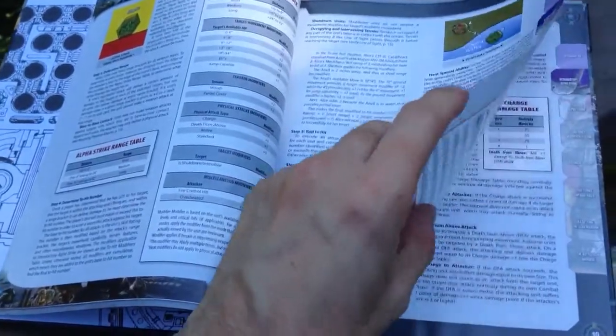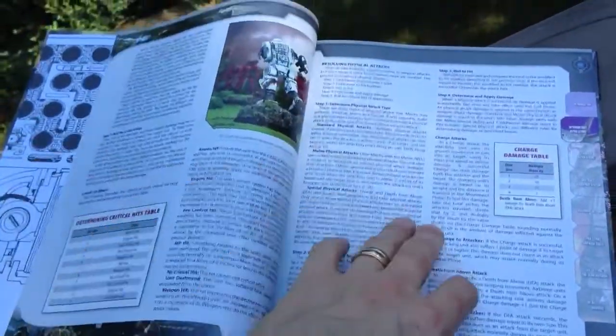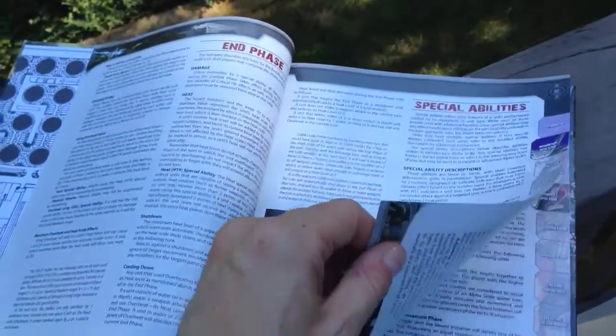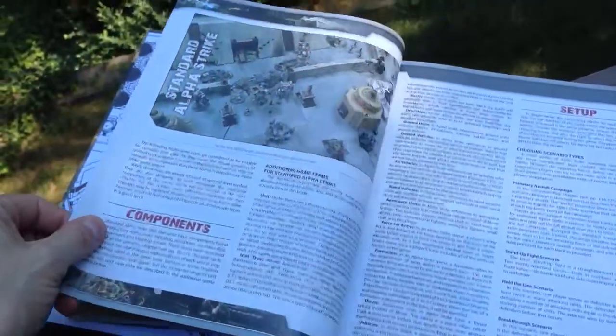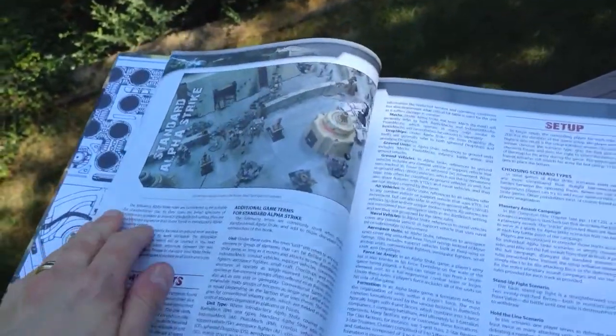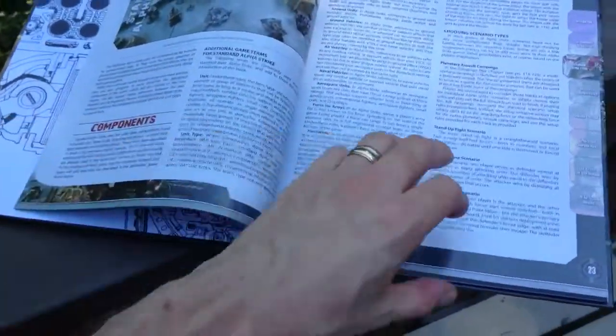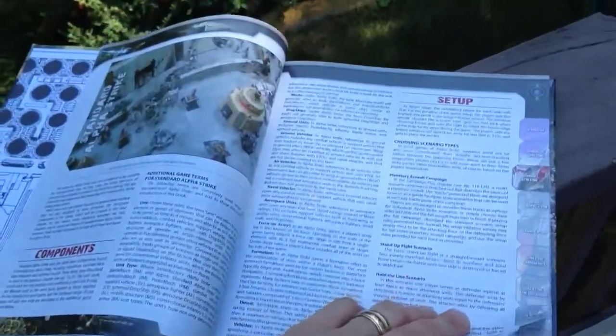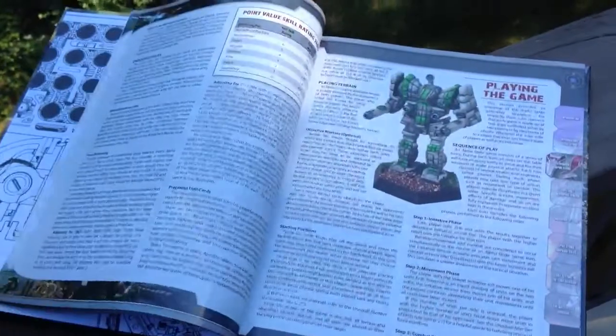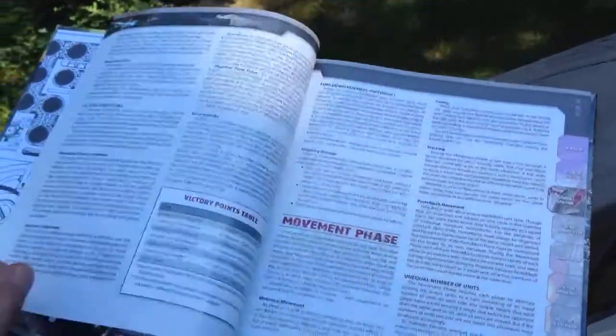I don't know why I'm talking like a Mater from Cars. But, see, the first section was introductory up through page 21. And then you've got your standard Alpha Strike rules.